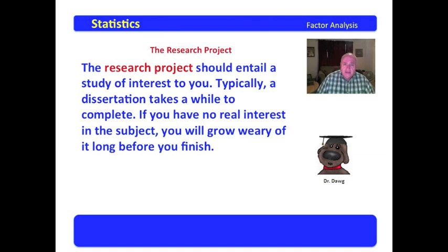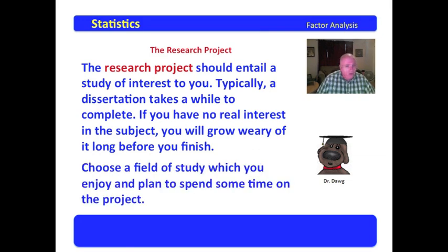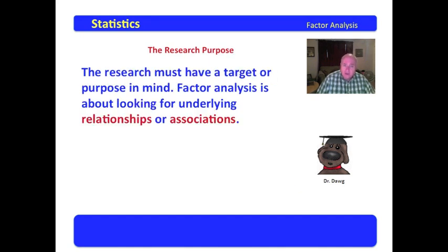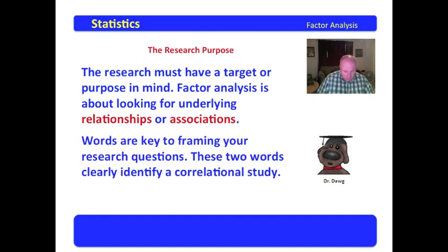The research project should entail a study of interest to you, as we've stated before — you're going to be with it a long time, so choose something that you like. It must have a target or purpose in mind. Factor analysis is about looking for underlying relationships or associations. And words are key to framing your research questions. These two words — relationships, associations — will identify a correlational study, and since factor analysis is fundamentally a correlational analysis, they can be used with a factor analysis project.